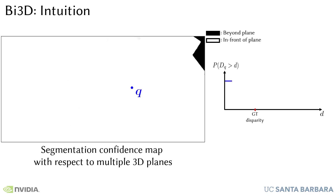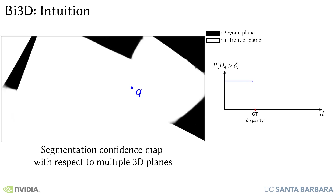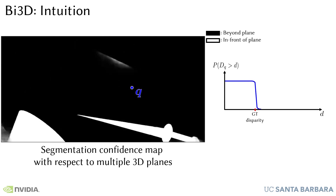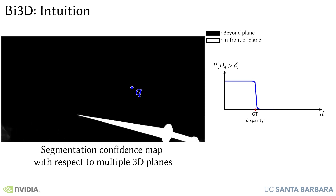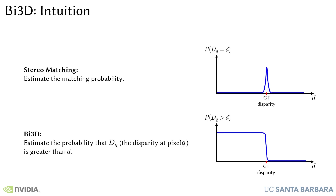To understand the basic intuition of our approach, consider the apparent displacement of objects as we move from the left image to the warped right image. We use this change in direction to classify the pixels into two regions: in front of and beyond the 3D plane. On the left we show the segmentation confidence maps as the 3D plane moves from farthest away to closer to the camera. On the right, we visualize the estimated probability that the disparity at pixel q is greater than the disparity used to generate the binary segmentation. While traditional approaches estimate the matching probability, we propose to estimate the probability that the disparity at pixel q is greater than d using a learning-based approach. This is the core difference between previous approaches and ours.